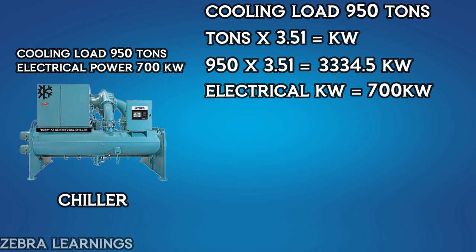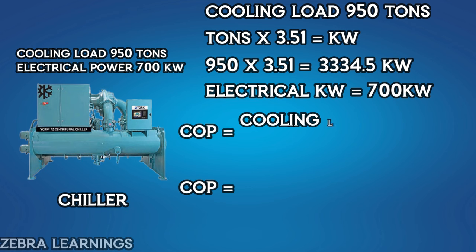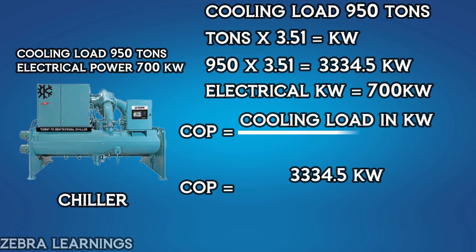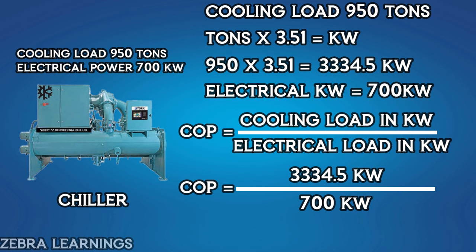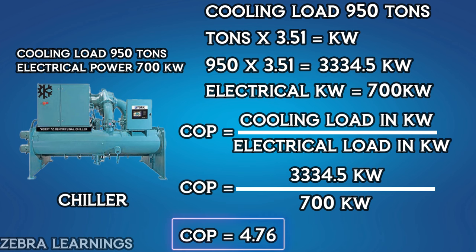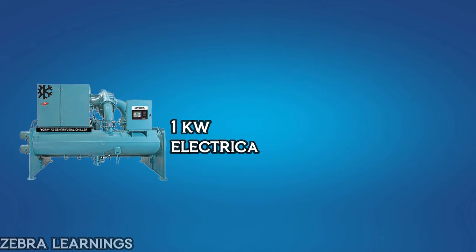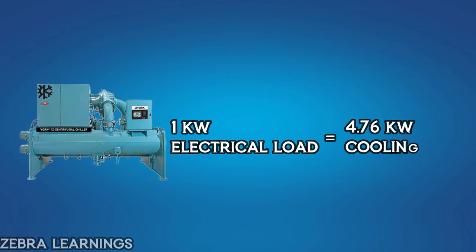Now we can use these values in the formula. COP equals cooling load 3334.5 kilowatts divided by electric load 700 kilowatts, which equals 4.76. The chiller's efficiency is 4.76. This means that for every 1 kilowatt of electric load, we get 4.76 kilowatts of cooling load.